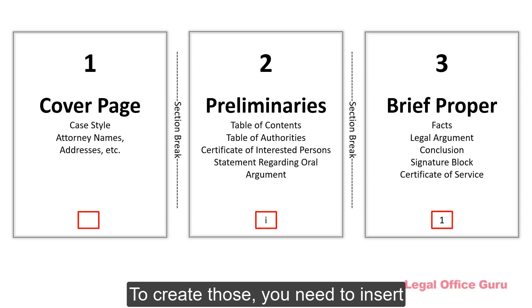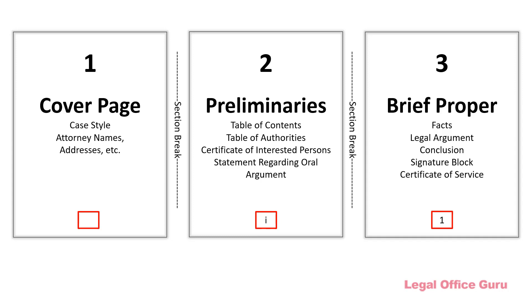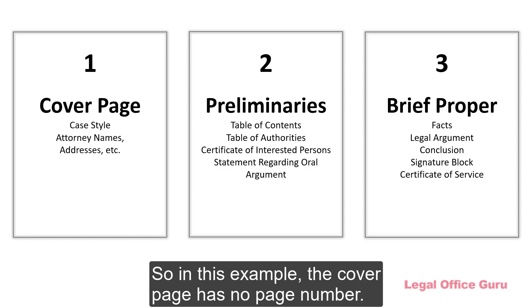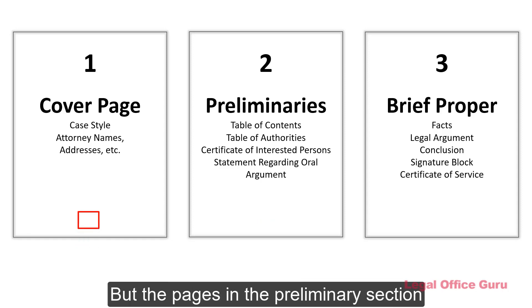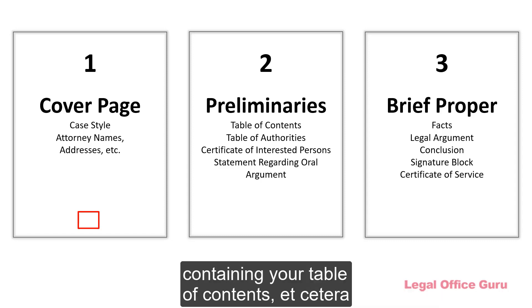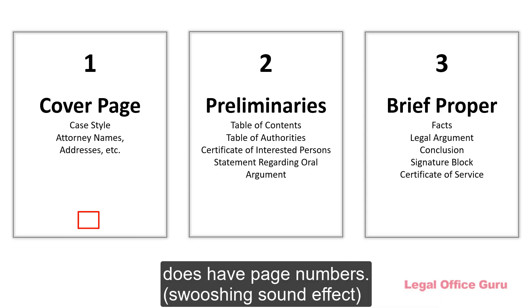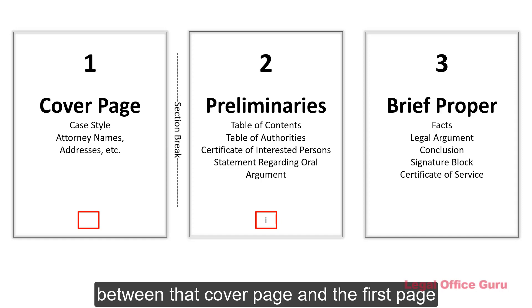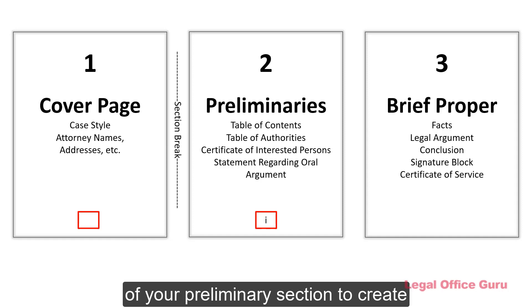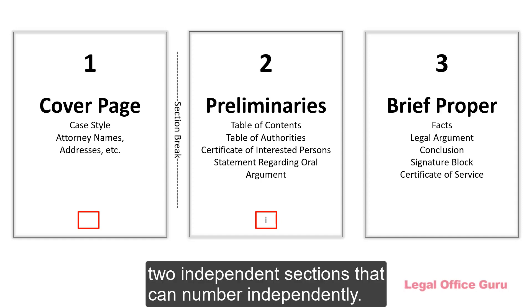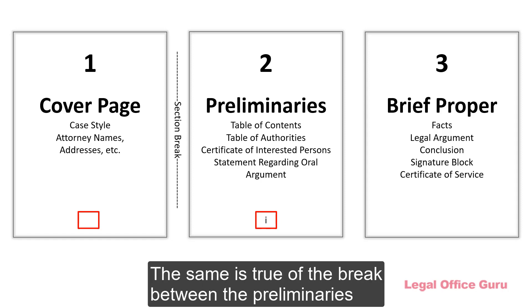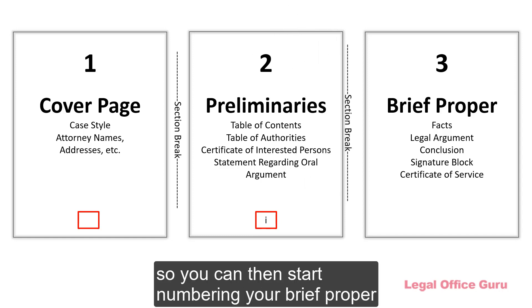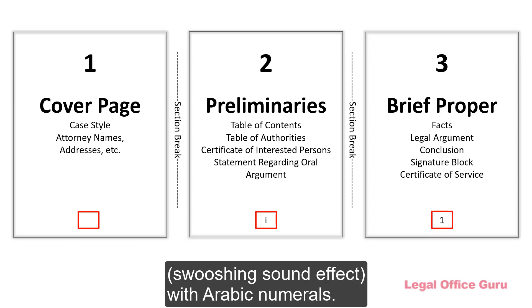To create those, you need to insert what Word calls a section break. It's sort of like a page break, but with special properties. So in this example, the cover page has no page number, but the pages in the preliminary section containing your table of contents, etc., do have page numbers. So you'd need a section break between that cover page and the first page of your preliminary section to create two independent sections that can number independently. The same is true of the break between the preliminaries and the brief proper — insert a section break so you can start numbering your brief proper with Arabic numerals.